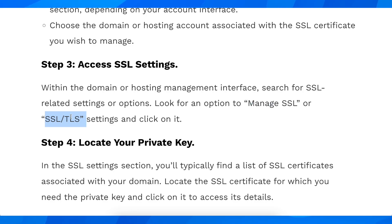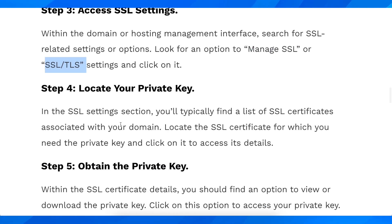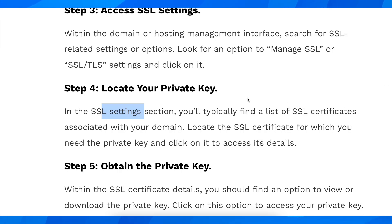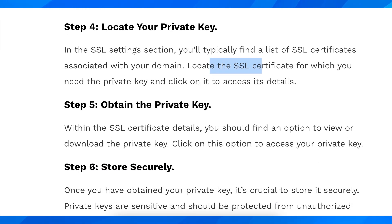Click on SSL/TLS settings. In the SSL settings section you'll typically find a list of SSL certificates associated with your domain. Locate the SSL certificate for which you need the private key and click on it to access its details. Within the SSL certificate details, you should find an option to view or download the private key — click on that option to access your private key.